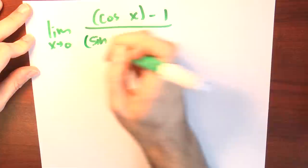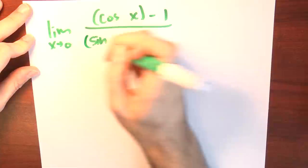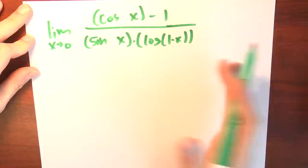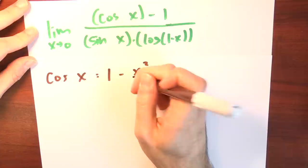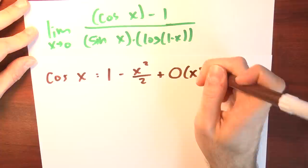But the fact that the argument's circular shouldn't stop us from making use of that kind of thinking where it's appropriate. Let's find the limit as x approaches 0 of cosine of x minus 1 in the numerator, divided by sine of x times log of 1 minus x. That's a very complicated looking limit. Let's approach it using Taylor series. The Taylor series for cosine looks like this: cosine of x is 1 minus x squared over 2 plus big O of x to the 4th.